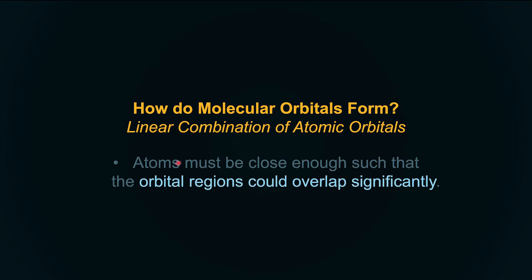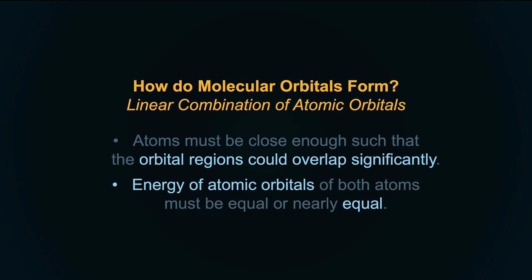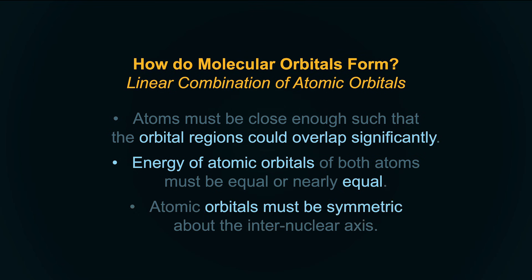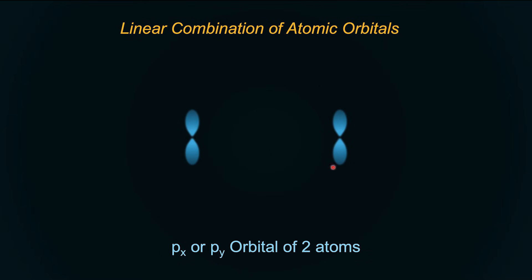Criteria for molecular orbital formation: atoms must be close enough for orbitals to overlap significantly. The energy of atomic orbitals of both colliding atoms must be equal or nearly equal — a 1s cannot interact with a 2s to form a linear combination. Atomic orbitals must also be symmetric about the collision axis. We saw that for S orbitals and for Pz.